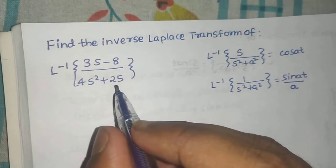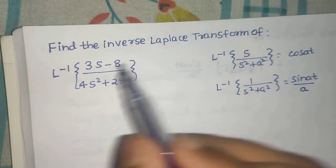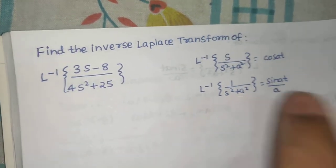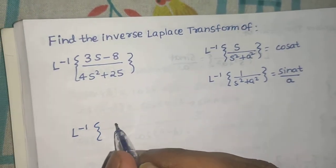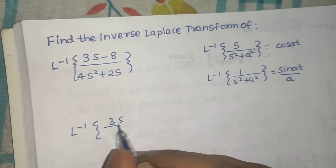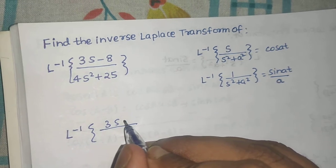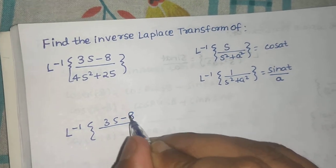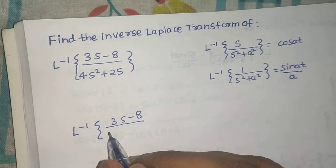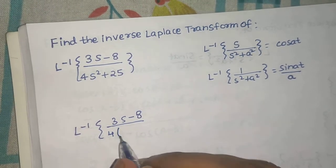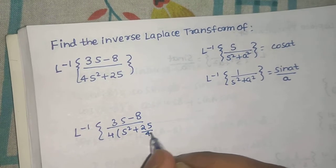Now we will try to make this into these two standard forms. So we will write Laplace inverse of 3s divided by... Let's do one thing first, 3s minus 8. Let's take this 4 out. So if you take this 4 out, in denominator it can be written as S square plus 25 by 4.